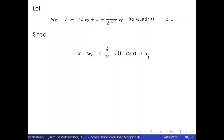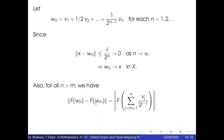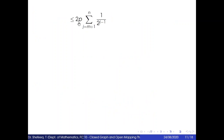Also, for all n > m, we have the norm of f(wn) − f(wm) equal to the norm of f of the sum from j = m+1 to n of vj / 2^(j−1), which is less than or equal to the sum from j = m+1 to n of the norm of f(vj) / 2^(j−1). Since vn is a subset of V₂p, this is less than or equal to 2p times the sum from j = m+1 to n of 1/2^(j−1).